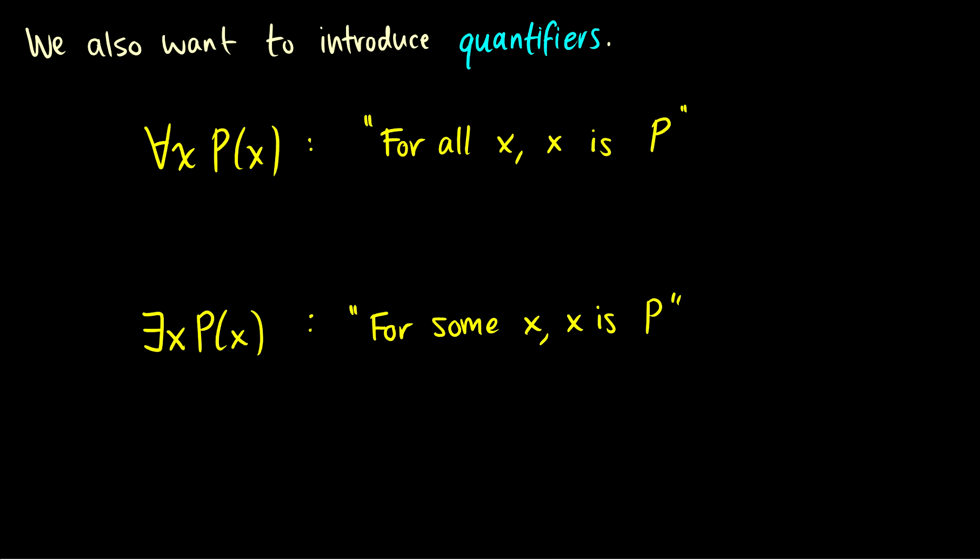But the more important thing it does is it gives us quantifiers. And this is the upside down A and the backwards E. So the upside down A is known as the universal quantifier. And for all x, P(x) is kind of read as 'for all x.' So this is for all x, and then P(x). So this could be 'for all x, x is P.' For all x, x is happy, something like that.